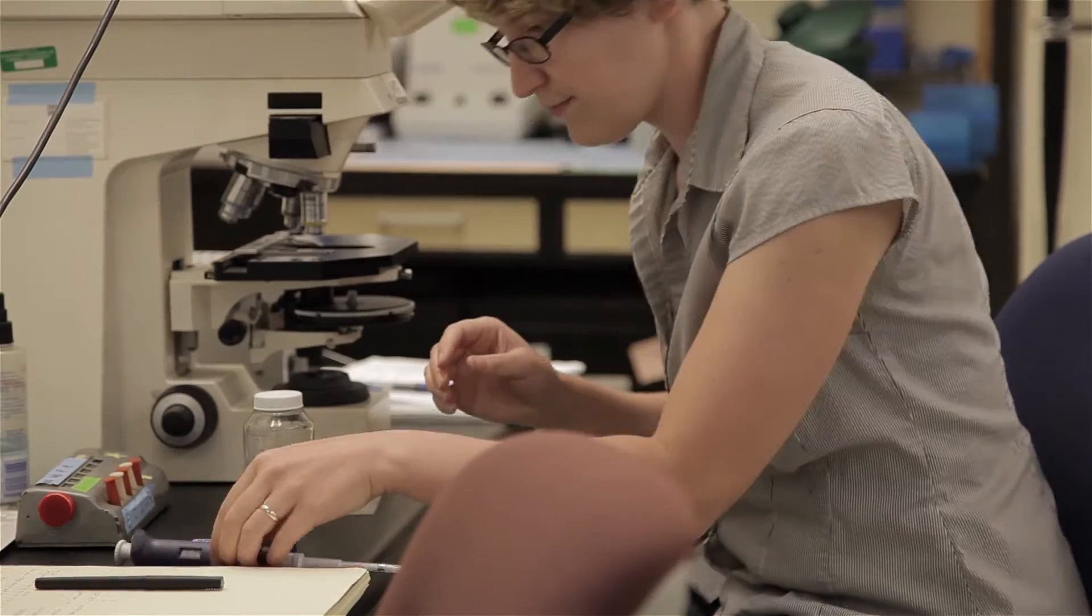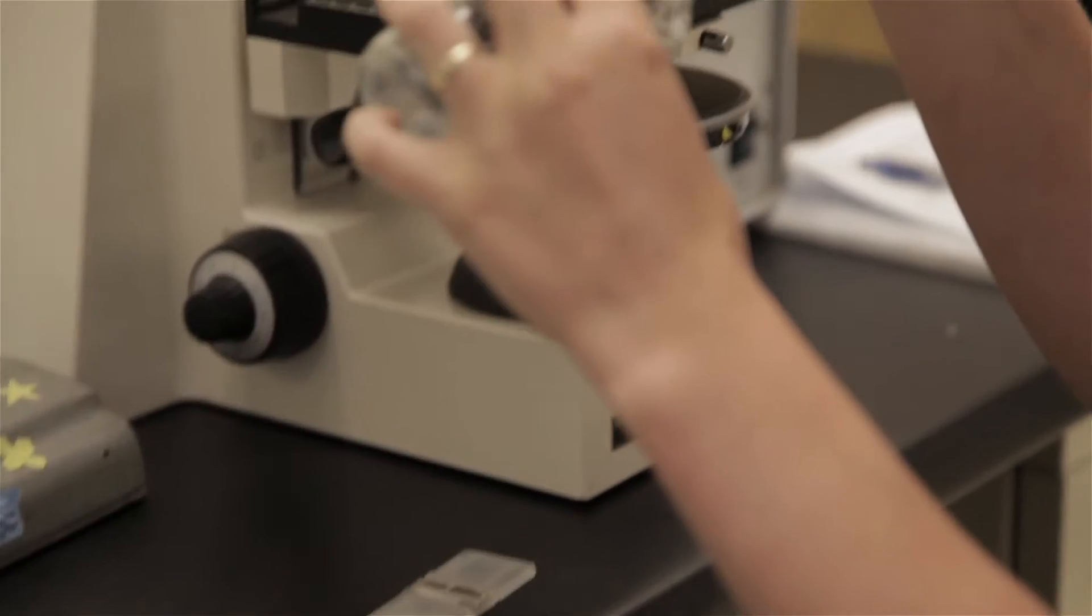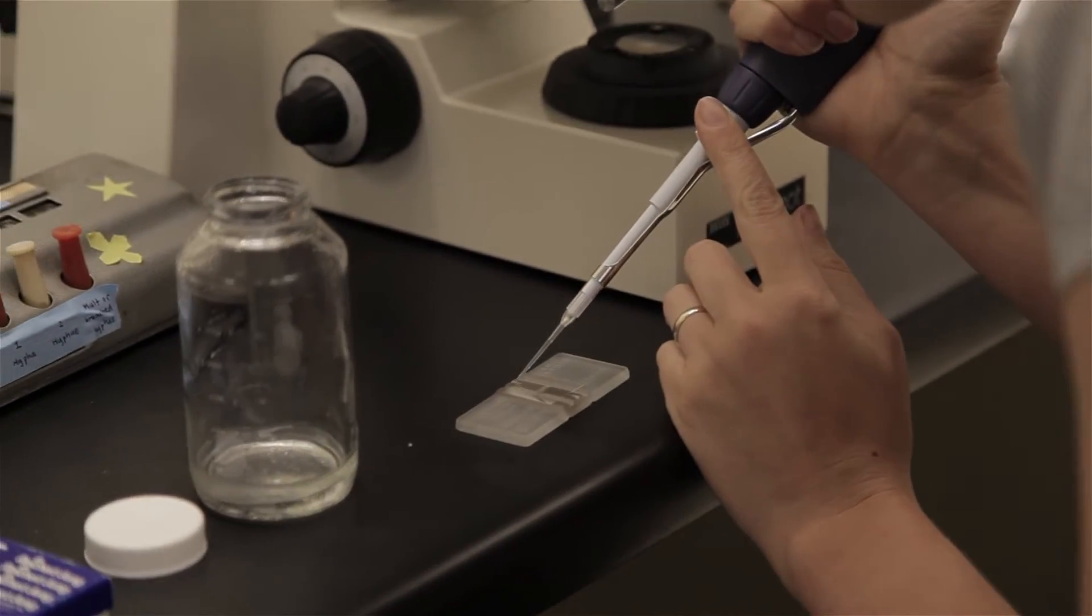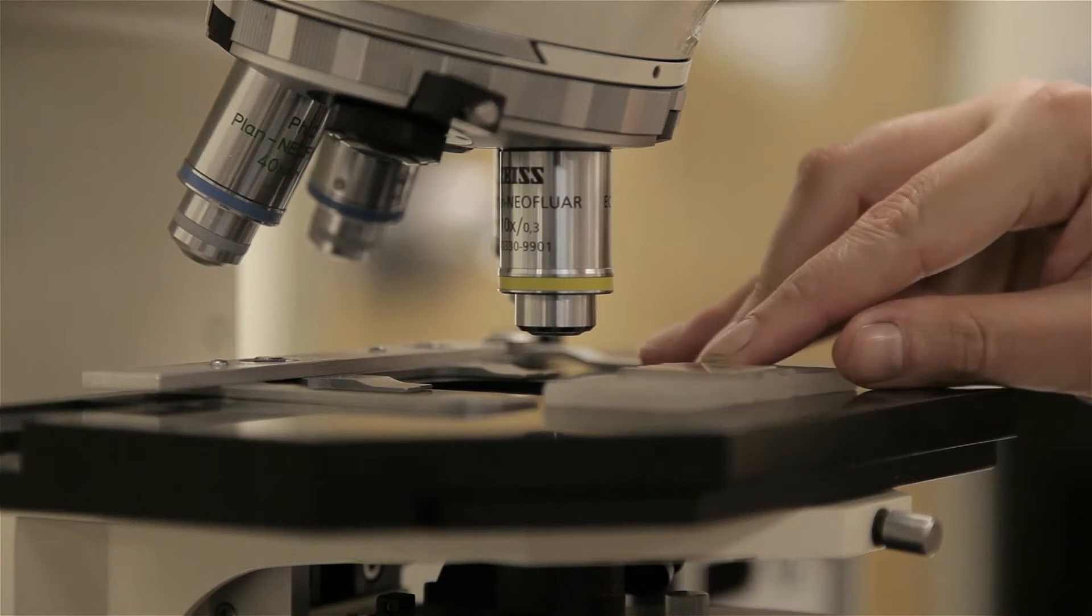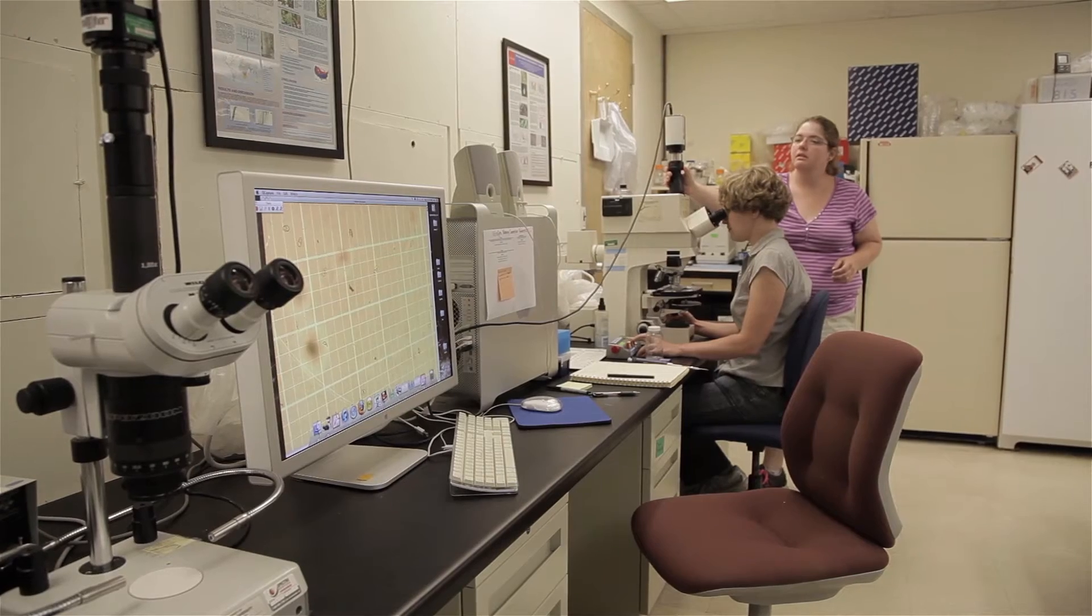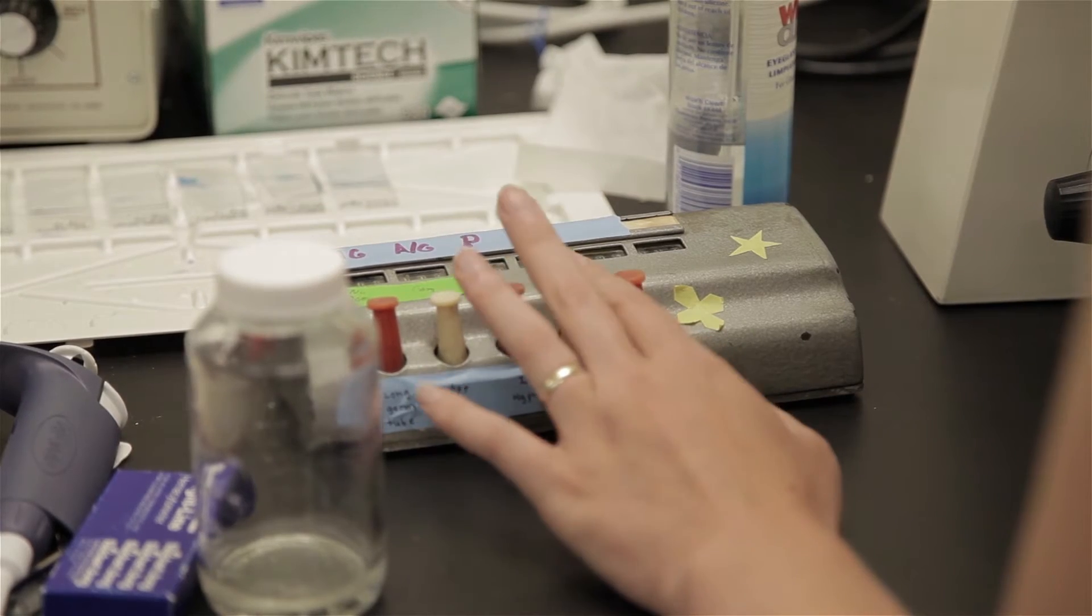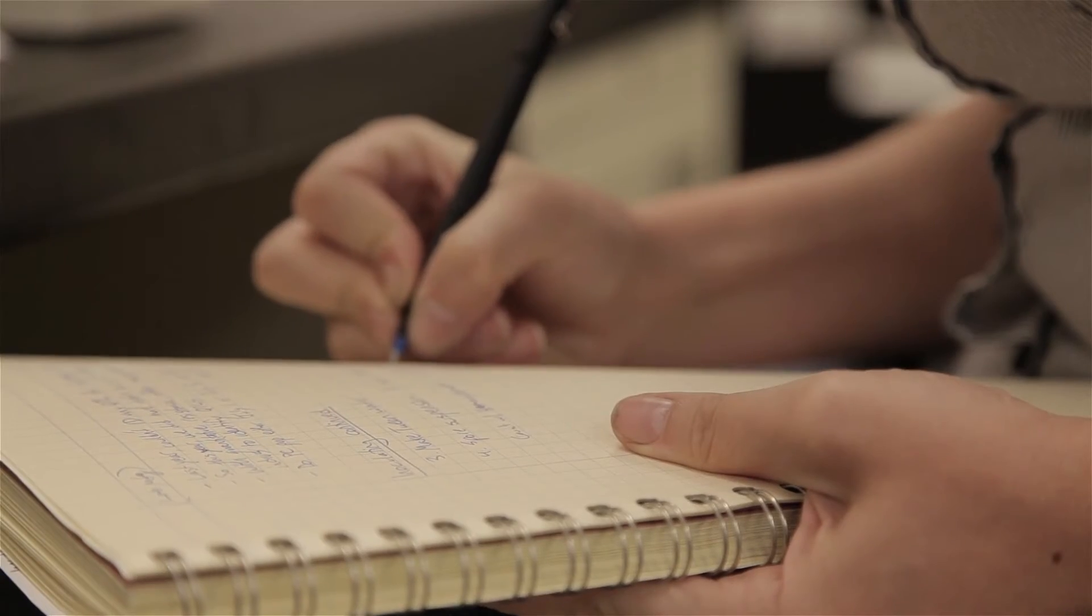After we make the spore suspension, we look at it under a microscope. We do that for two reasons. One, we need to make sure that there are enough spores in the spore suspension that when we collect the data, there'll be enough data that it will be meaningful. And two, we also want to make sure that there are roughly the same amount of spores in our spore suspensions for different populations.